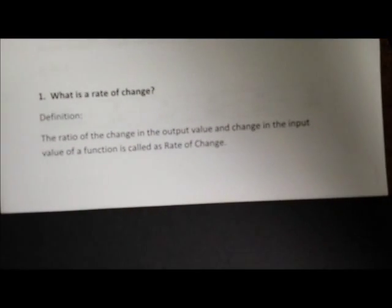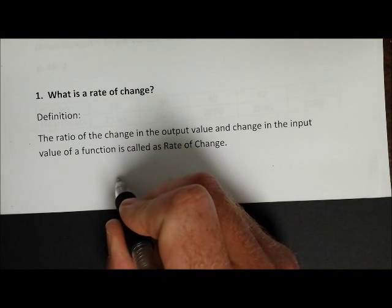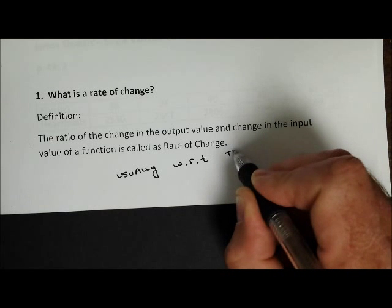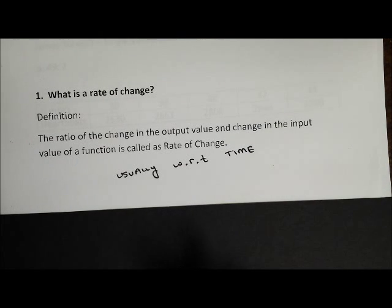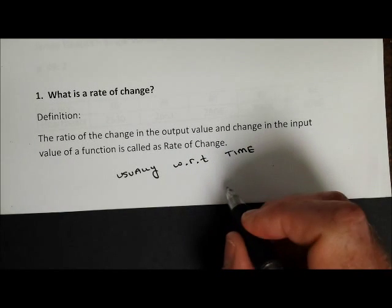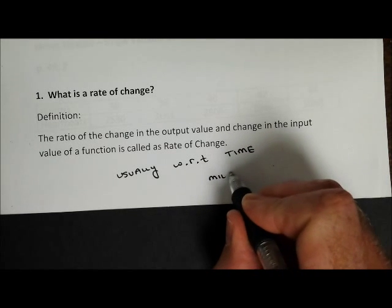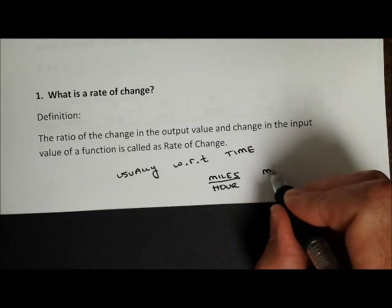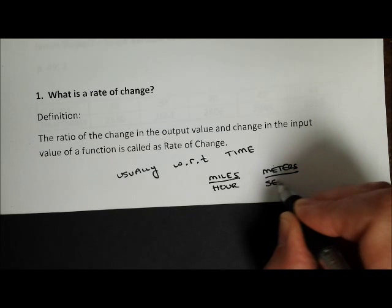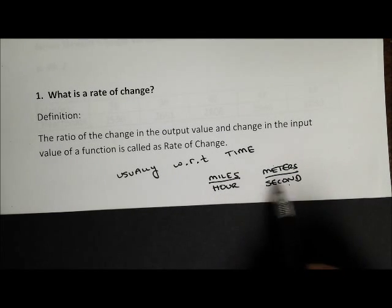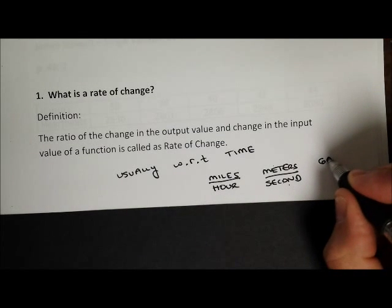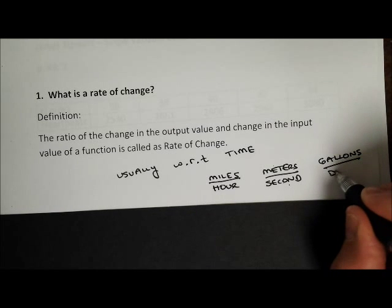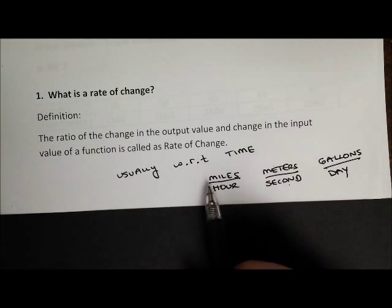So, common rates of change. Most rates of change are usually with respect to time. They don't have to be, but these are the most common. To give you some examples in ratio or fraction form: in the United States the most common rate is miles per hour. In math and science classes we talk about meters per second. Notice these ratios are with respect to time — hours and seconds. Even something like a water main break in Cleveland: we can talk about how many gallons per day that break went. All of those are rates of change — usually with respect to time, but not necessarily.